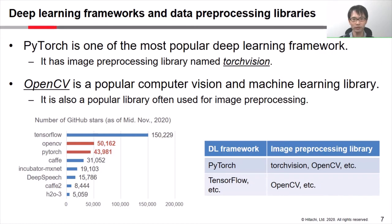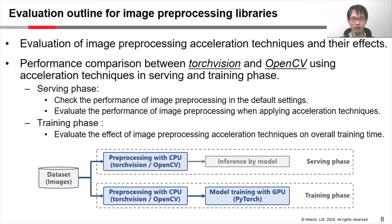I'll explain the evaluation outline for TorchVision and OpenCV for image preprocessing. In order to speed up image preprocessing, we applied acceleration techniques for these libraries and evaluated their effects. We compared performance between TorchVision and OpenCV using acceleration techniques in the serving and training phases.